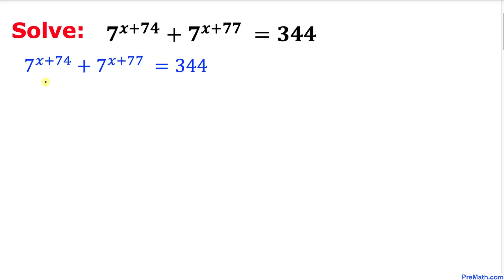Now let me go ahead and tweak these exponents a little bit. The first one I'm going to just leave it as it is: 7 to the power of x plus 74. And then over here, this one I can write 7 to the power of x plus 77, which could be written as 74 plus 3, isn't it? Equals 344.